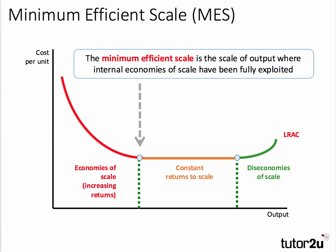So the minimum efficient scale is the lowest output where internal economies of scale have been fully exploited. Now it's unlikely to be a very precise estimate — firms will get there by learning by doing, being in the market and finding an optimum output from a cost efficiency point of view.